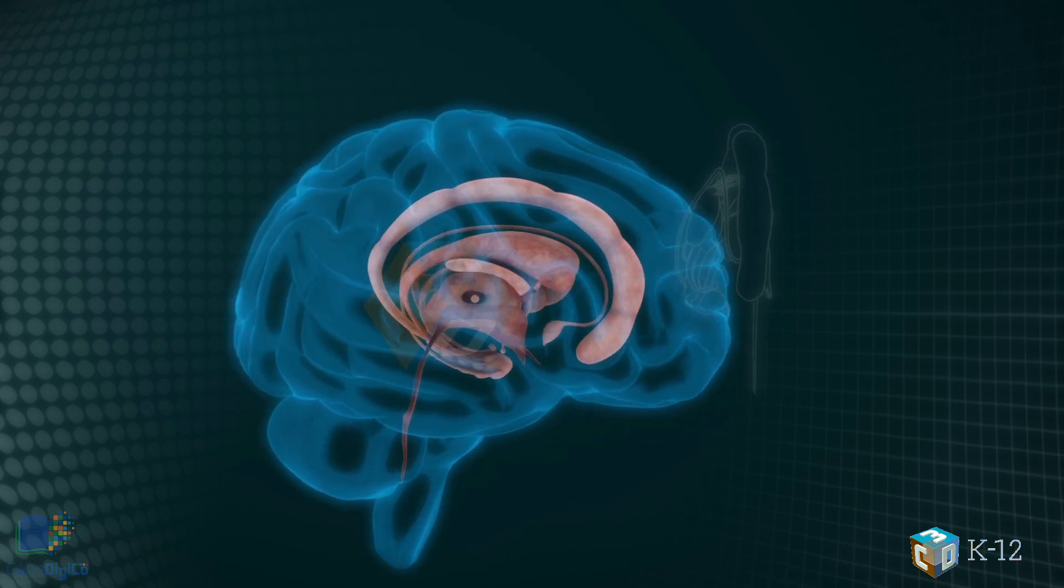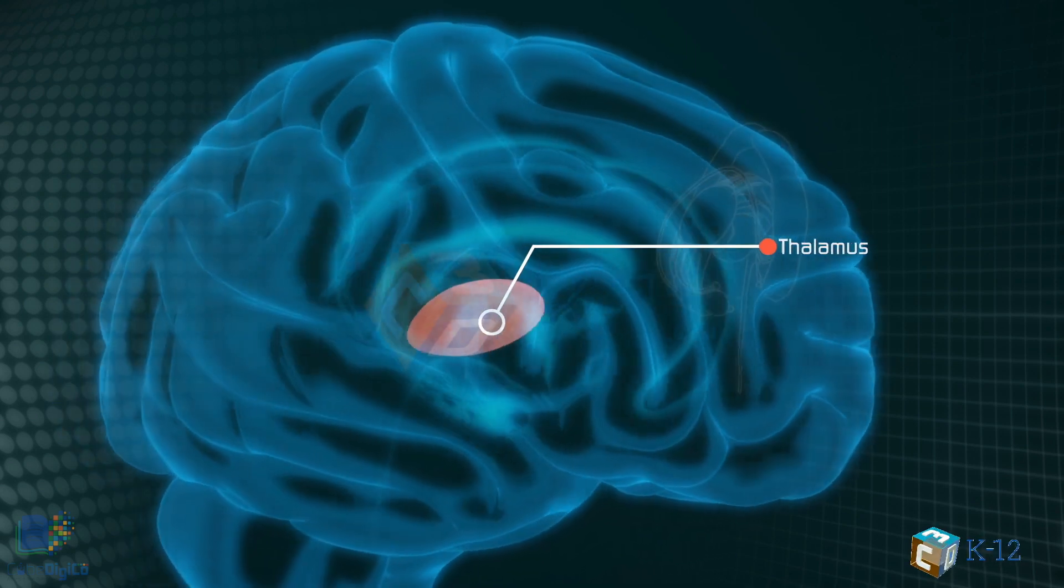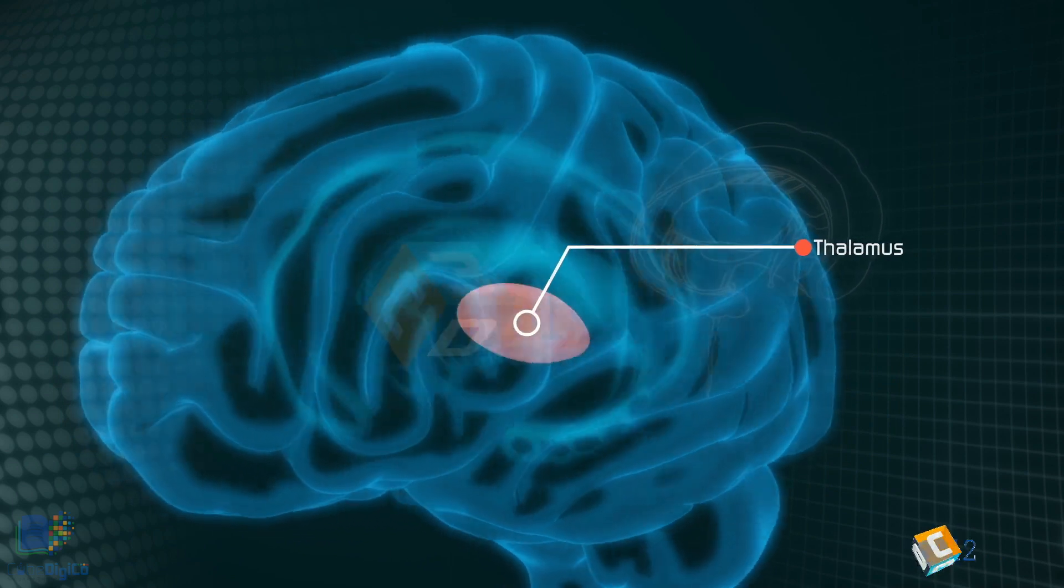Near the hypothalamus lies the thalamus, a major clearing house for information going to and from the spinal cord and the cerebrum.